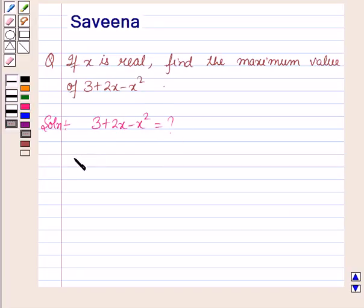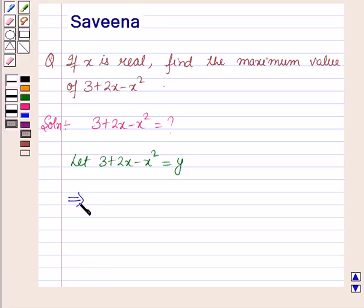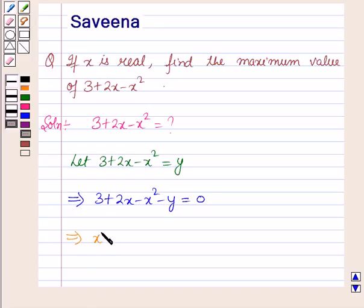Now let 3 plus 2x minus x squared be equal to y. This implies 3 plus 2x minus x squared minus y is equal to 0, which implies x squared minus 2x plus (y minus 3) is equal to 0.